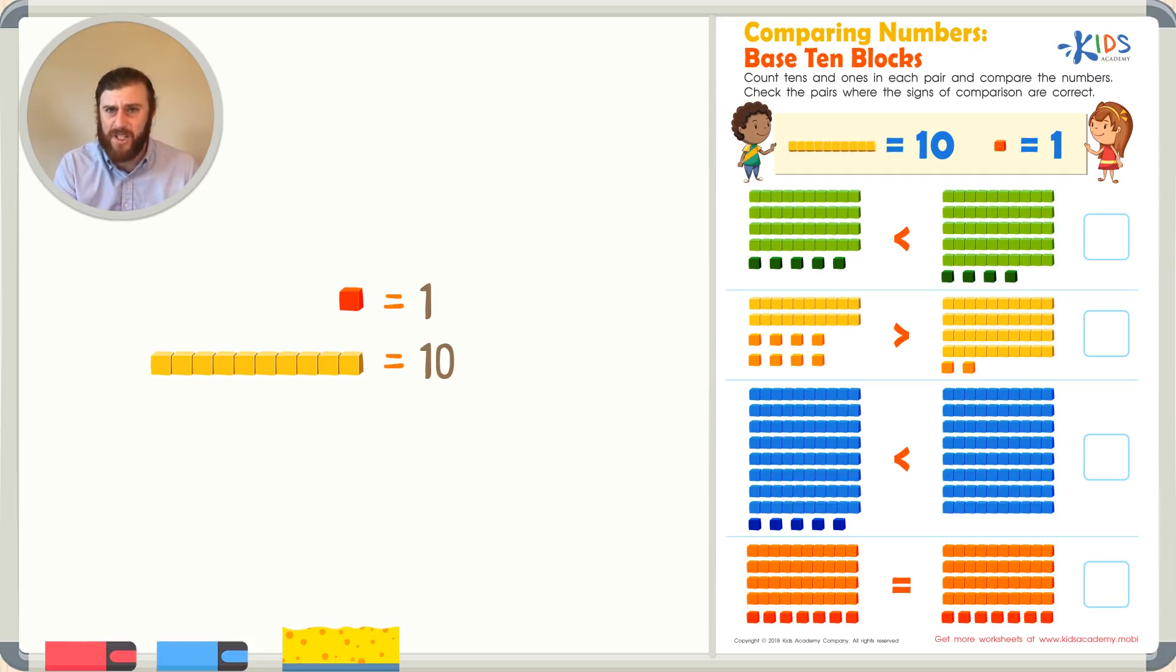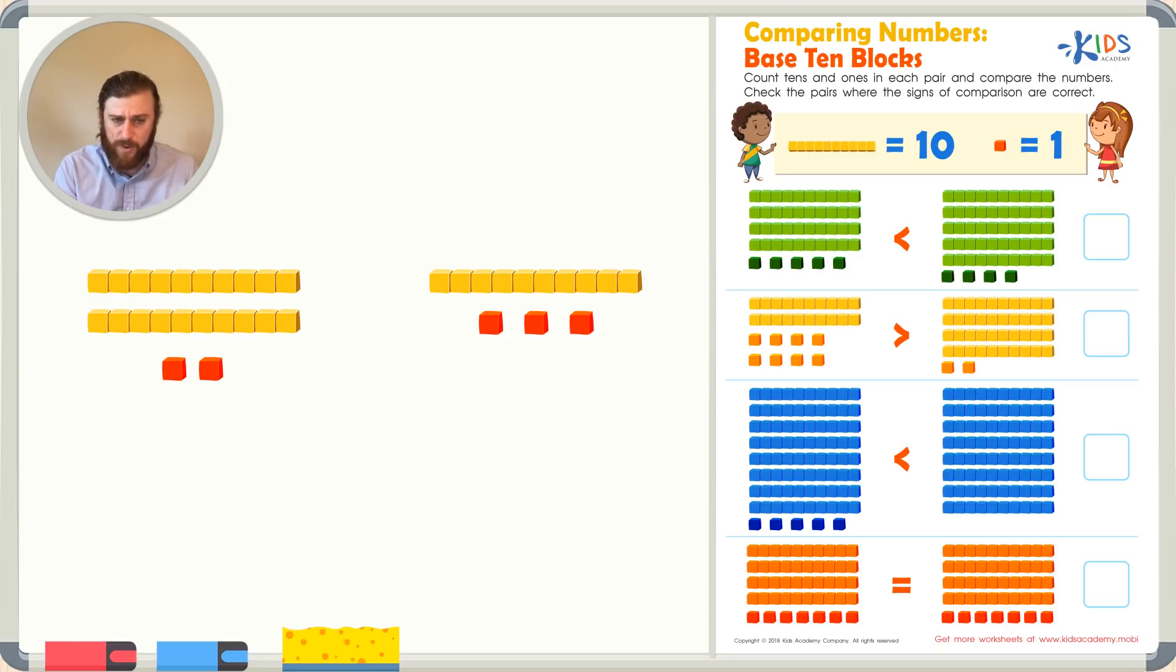Let's use this information to help us to compare numbers with base 10 blocks. Let's say, for example, we had a number with 2 longs and 2 cubes. We wanted to compare this to a number with 1 long and 3 cubes. Well, what do these blocks really represent? One way we can see what this number is quickly is by simply counting the base 10 blocks starting with the longs. So, let's give it a shot.